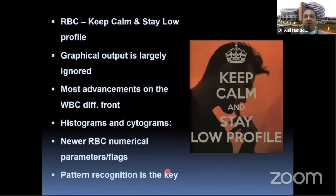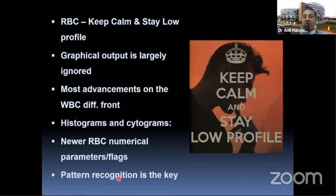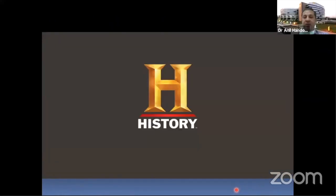By convention, RBCs have kept a very low profile and their graphical output is largely ignored. If you look at the development of analyzer techniques, most advancements have happened predominantly on the WBC or platelet front. However, the newer RBC parameters — especially from graphical data and scatter plots — enable what is called pattern recognition, from which one can actually identify disease states.